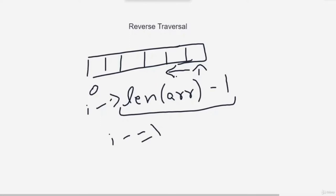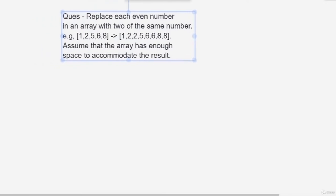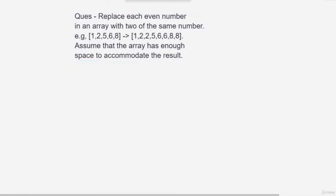There are different advantages — we can solve problems in a different manner when traversing in reverse order. I will show you an example question. This is an intermediate level question: we have to replace each even number in an array with two of the same number.